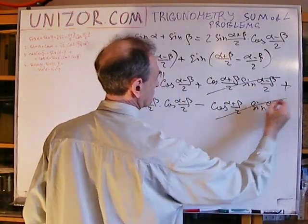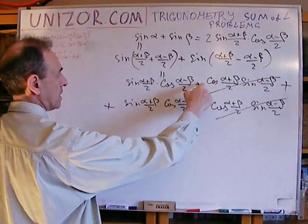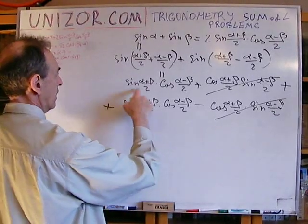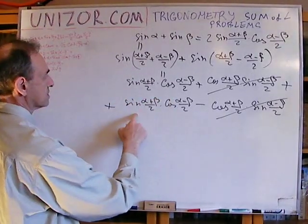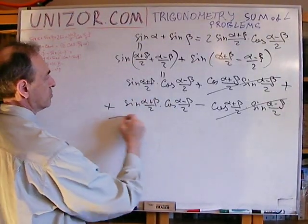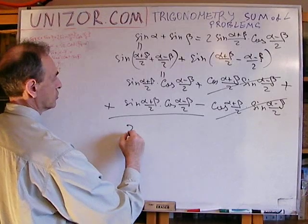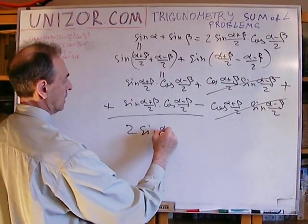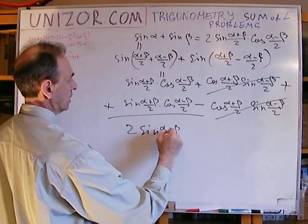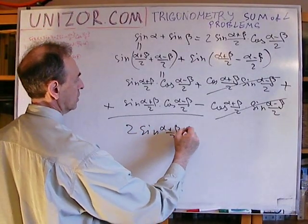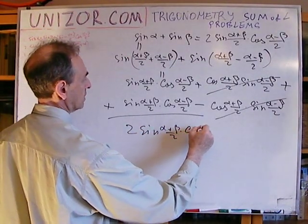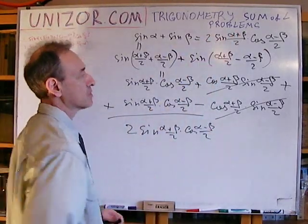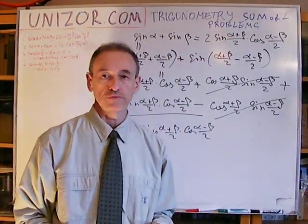Here we have a plus and a minus. This term is the same as this term, which makes them two sine of alpha plus beta over two times cosine of alpha minus beta over two, which is exactly what we wanted to prove.